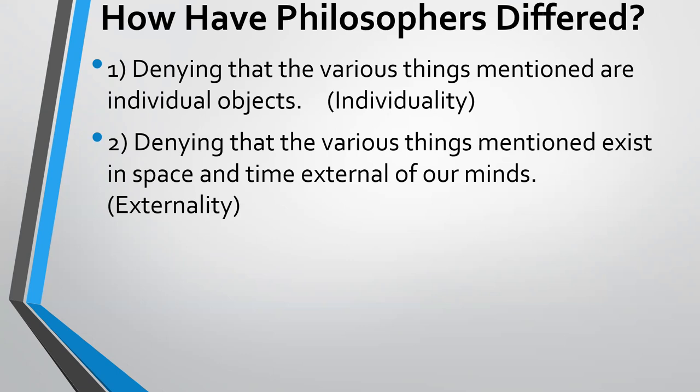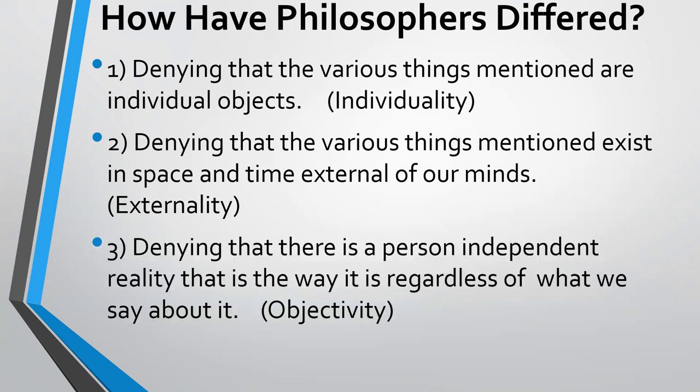A third way philosophers have differed from the common Western metaphysic is to deny that there is a person-independent reality — that there is an objective reality regardless of what we say about it. That's the topic of objectivity or relativism, again not in the realm of morality, but in the realm of metaphysics.